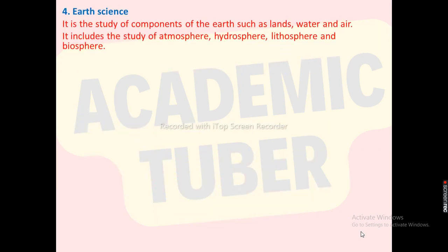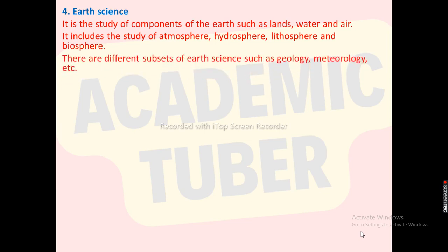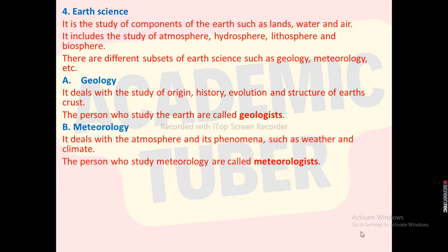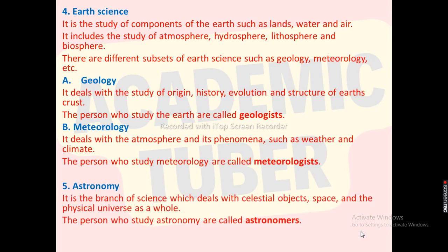The next branch is earth science, which is the study of components of the earth such as land, air, and water. It includes the study of the atmosphere, hydrosphere, lithosphere, and biosphere. Its subjects include geology and meteorology. Geology deals with the study of origin, history, evolution, and the structure of the earth's crust, and persons who study it are called geologists. Meteorology deals with the atmosphere and its phenomena such as weather and climate, and those who study it are called meteorologists. Astronomy deals with celestial bodies, space, and the physical universe as a whole, and those who study it are called astronomers.